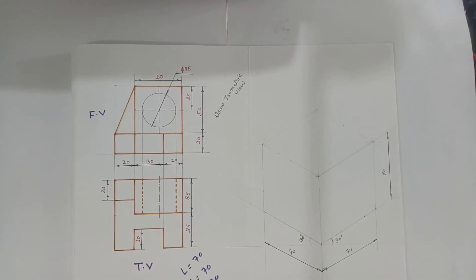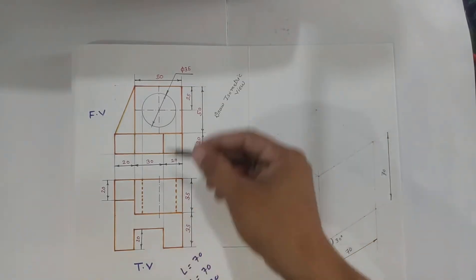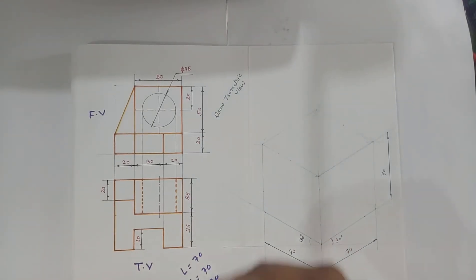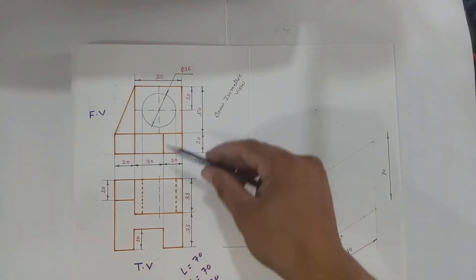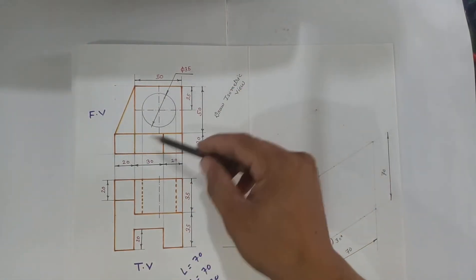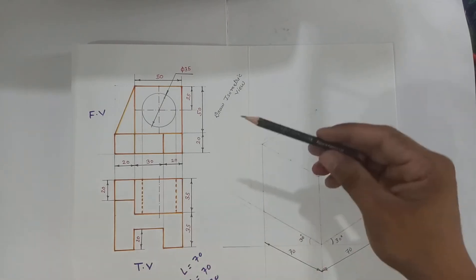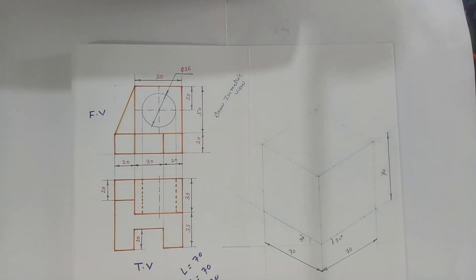Hello everyone, today we are going to solve another problem of isometric projections. The orthographic views of the object are given — the front view and top view — and by using these two views we have to draw the isometric view of the object. Let us start by finding the length, width, and height of the object.